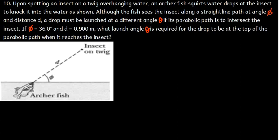If its parabolic path is to intersect the insect, if phi is 36 degrees and d is 0.900 meters, what launch angle theta is required for the drop to be at the top of the parabolic path when it reaches the insect?